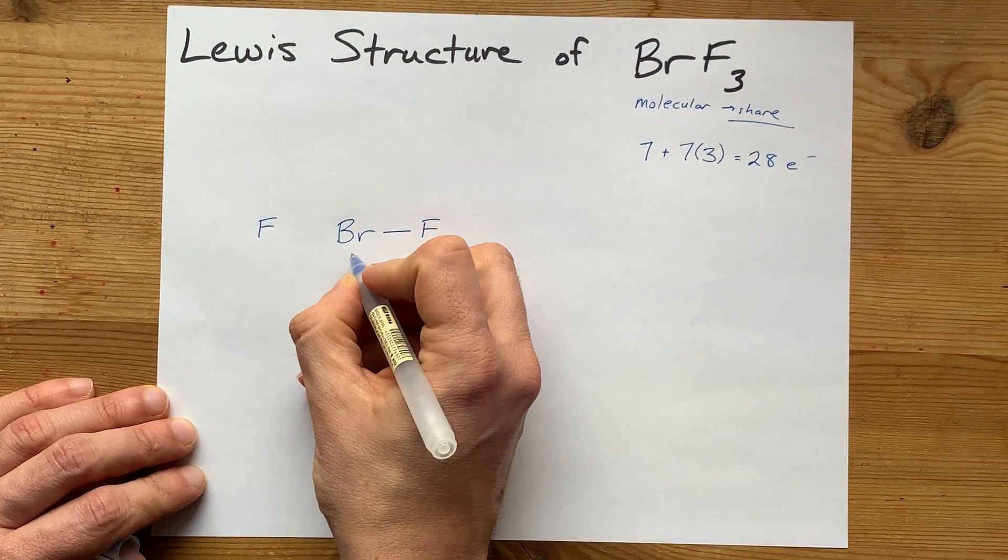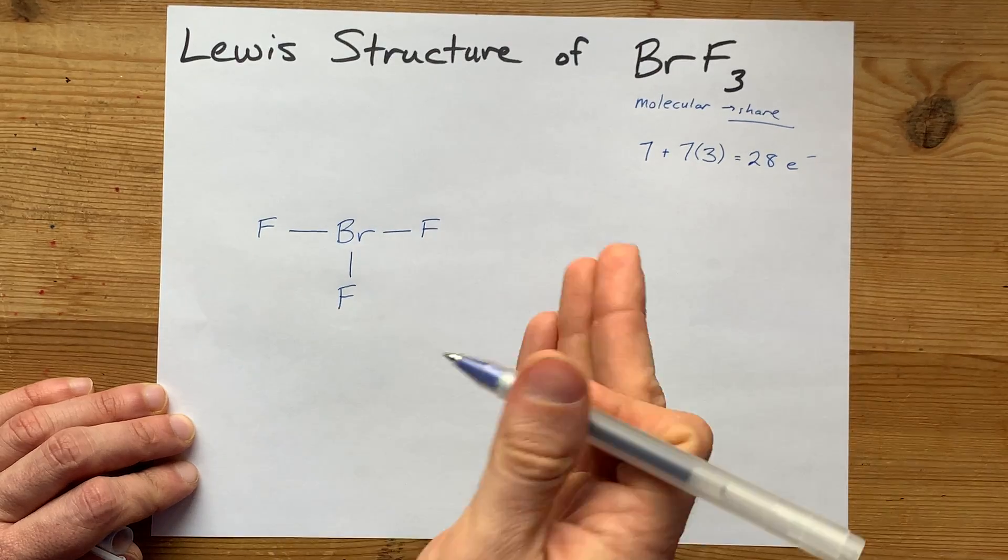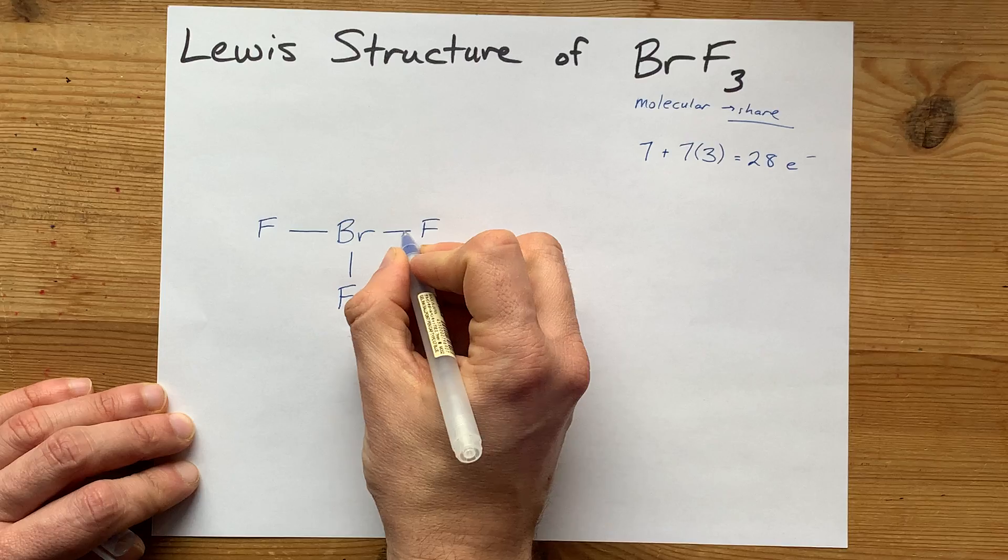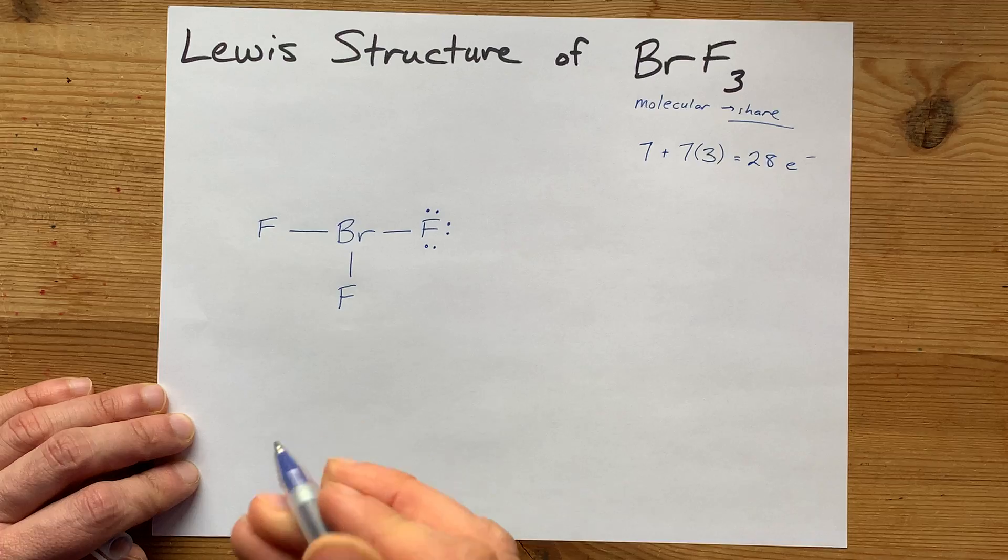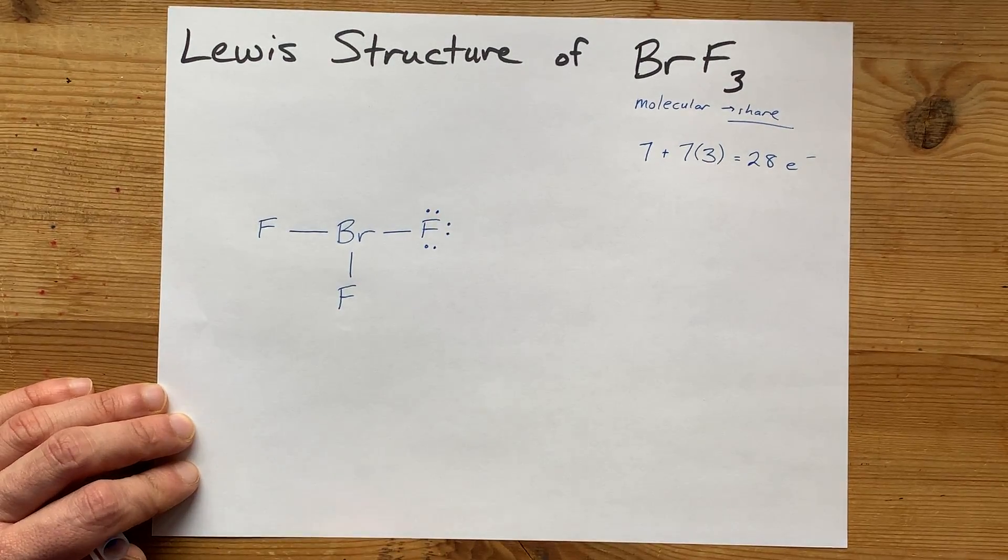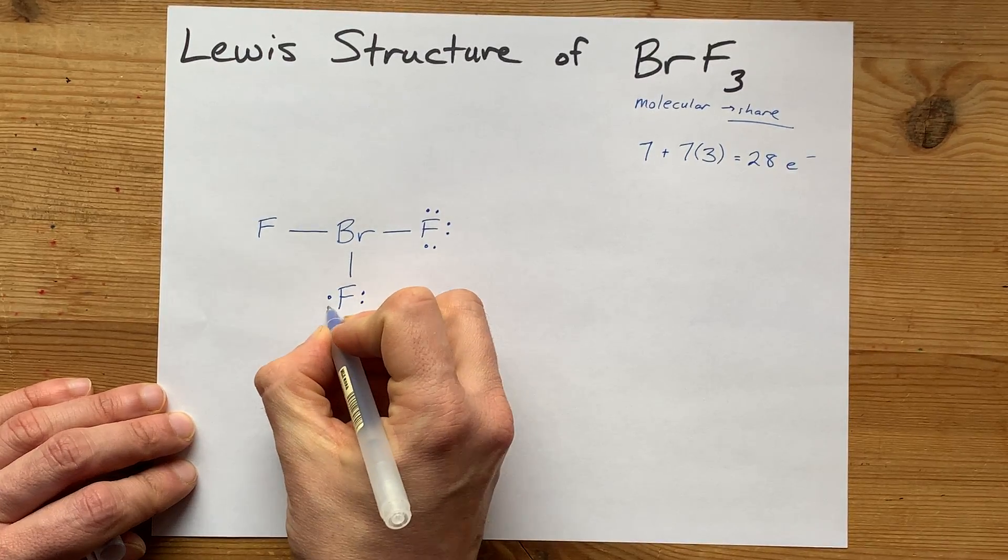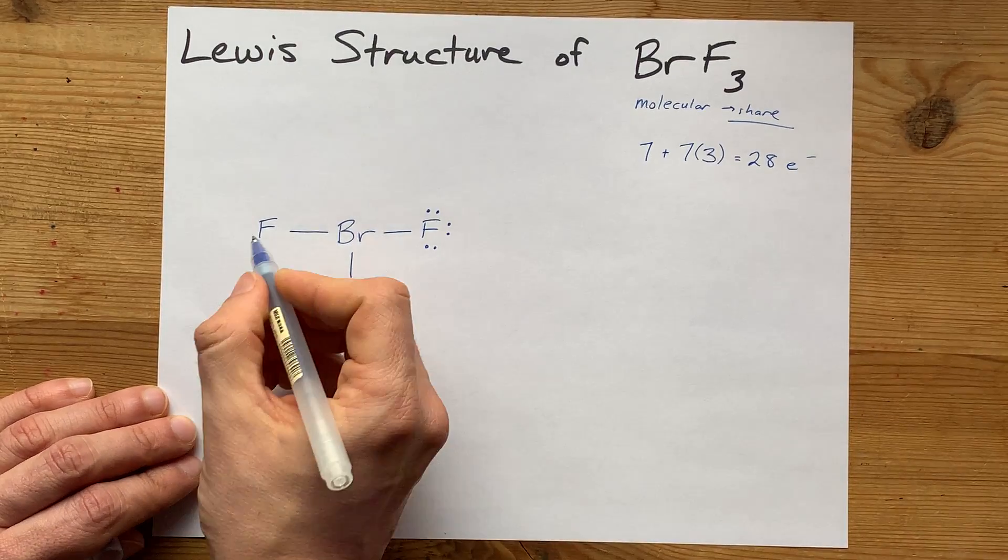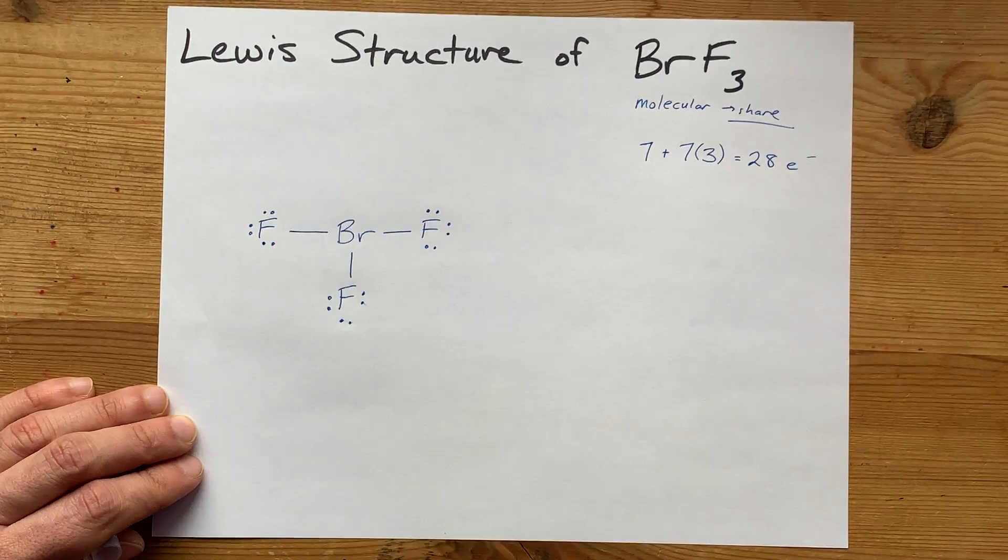Now I'm going to single bond the central atom to all the outer atoms, and then I'm going to fill the octets of my outer atoms. This fluorine already has 2 electrons, so I need a 3rd, 4th, 5th, 6th, 7th, and 8th electron. Now that fluorine satisfies the octet rule. We've got to do it again for the second fluorine. And, like my best friend DJ Khaled says, another one. Adding the 3rd through 8th electrons to complete the third fluorine.